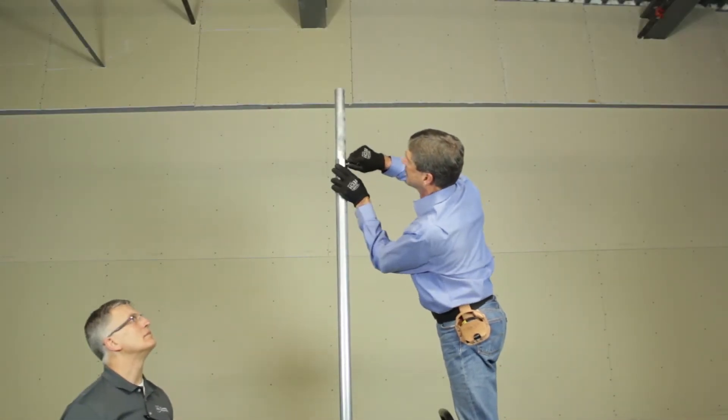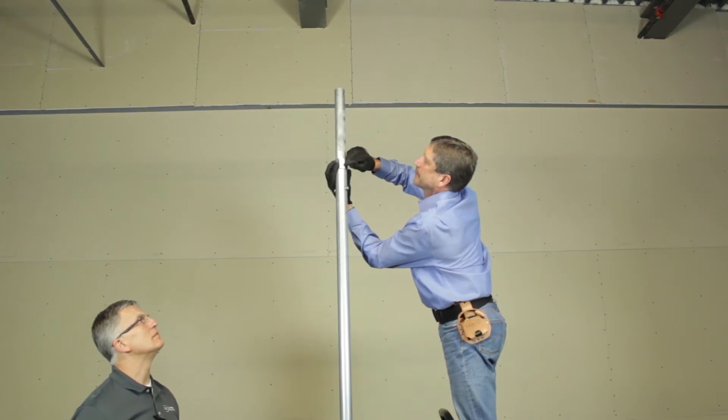Attach the two guy ring collars to the tripod mast using the two upper bolts that connect the mast extension to the mast.